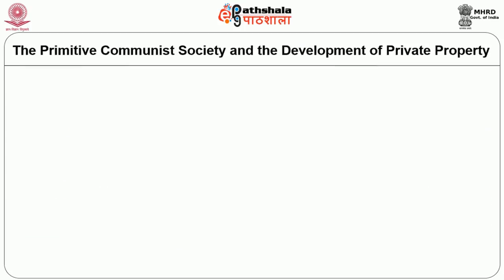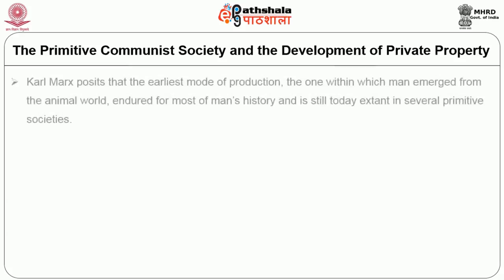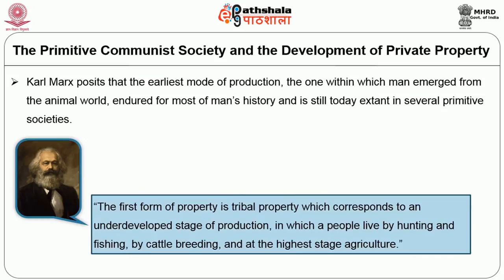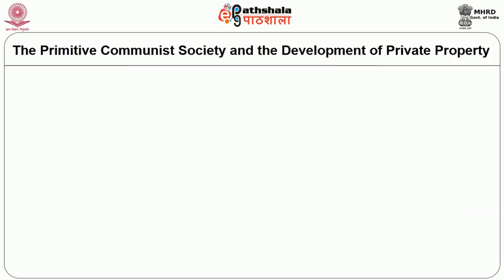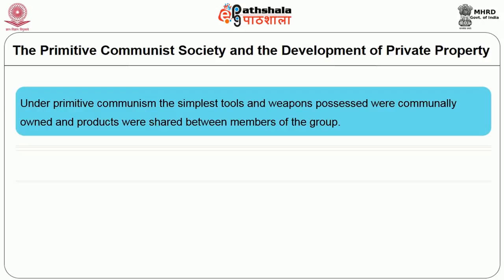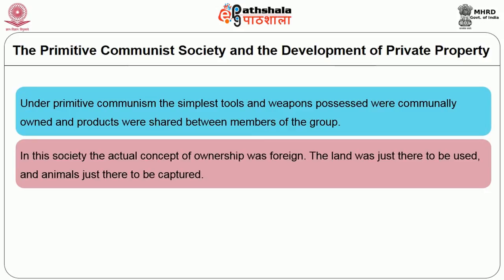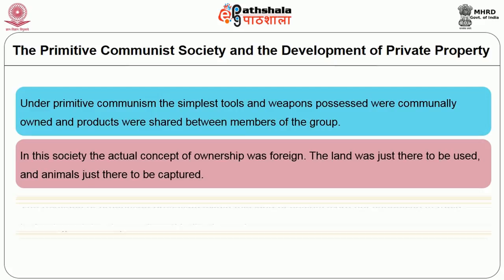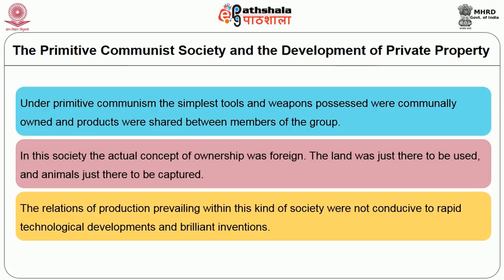The primitive communist society and development of private property is the first stage. Karl Marx posits that the earliest mode of production — the one within which humans emerged from the animal world — endured for most of human history and is still extant in several primitive societies today. The first form of property is tribal property, corresponding to an underdeveloped stage of production in which people live by hunting and fishing, cattle breeding, and at the highest stage agriculture. Under primitive communism, the simplest tools and weapons were communally owned and products were shared between members of the group. The actual concept of ownership was foreign; the relations of production were not conducive to rapid technological development or scientific inventions.